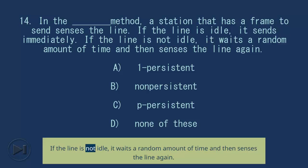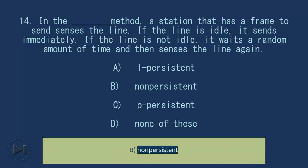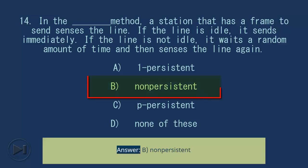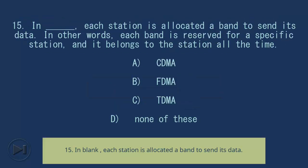Question 14: In the blank method, if the line is not idle it waits a random amount of time and then senses the line again. A) One-persistent, B) Non-persistent, C) P-persistent, D) None of these. Answer: B) Non-persistent.